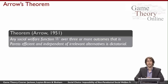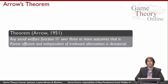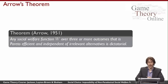Here's the punchline. Kenneth Arrow, in 1951, famously proved the following theorem: any social welfare function over three or more outcomes — elections with more than two candidates — that is Pareto efficient and independent of irrelevant alternatives must be dictatorial. These two things that seem very natural, Pareto efficiency and independence of irrelevant alternatives, are so constraining on the set of social welfare functions that they imply we would have to have a dictatorial social welfare function.